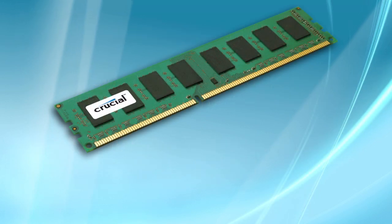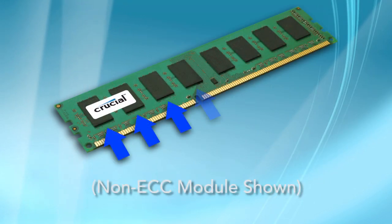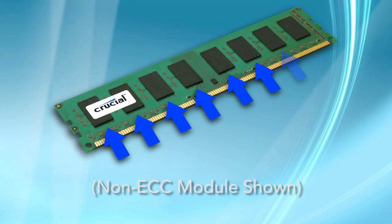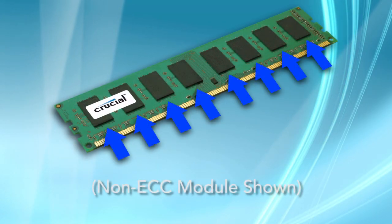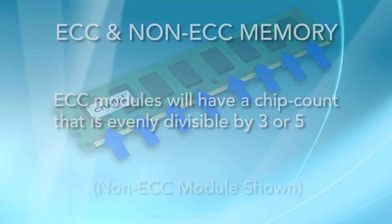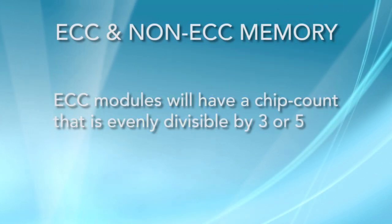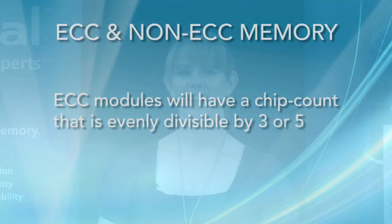You can tell if your system has ECC by simply counting the number of black memory chips on each module. ECC memory modules have a chip count divisible by 3 or 5. The extra chip is the one that detects if the data was correctly processed by the memory module.